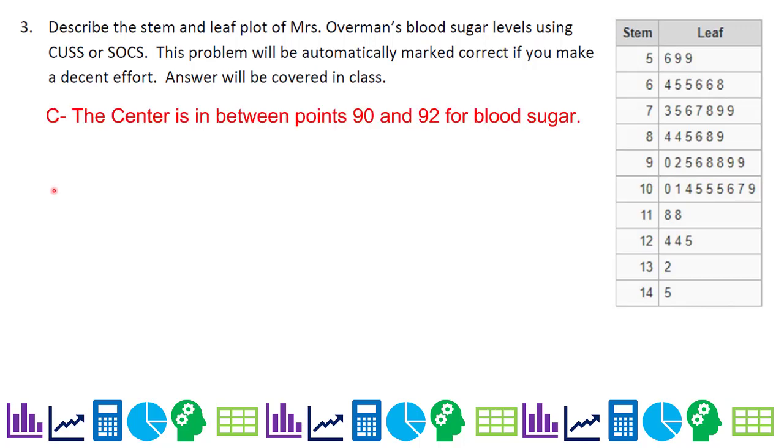The center is somewhere between points 90 and 92. If I counted all these data points, I would find the center. There are no outliers or gaps. As far as we can see, this is called a stem and leaf plot, and every row has data.